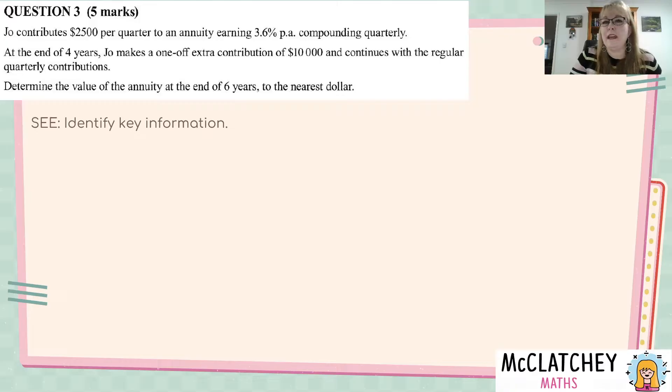Let's have a look at it. Question three was worth five marks. Joe contributes $2,500 per quarter to an annuity earning 3.6% per annum, compounding quarterly. At the end of four years, Joe makes a one-off extra contribution of $10,000 and continues with the regular quarterly contributions. Determine the value of the annuity at the end of six years to the nearest dollar.